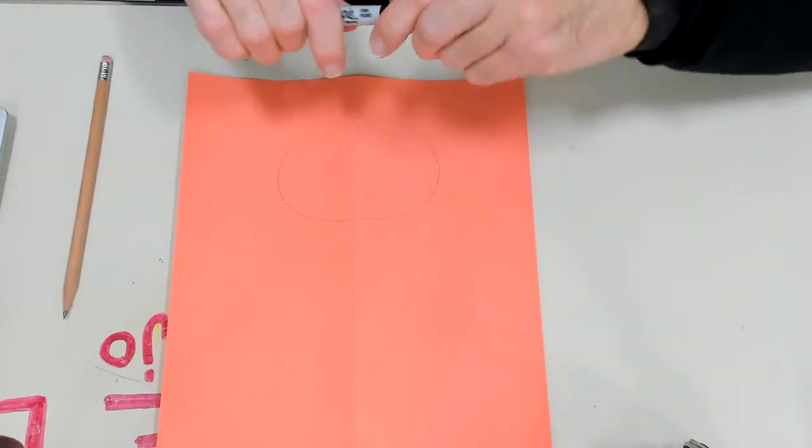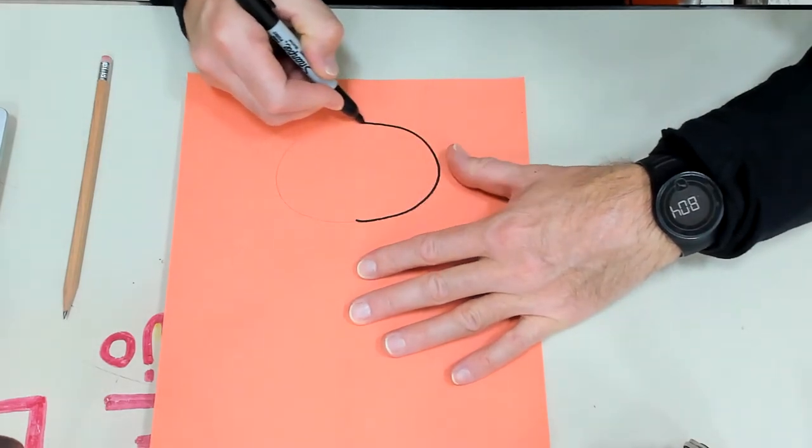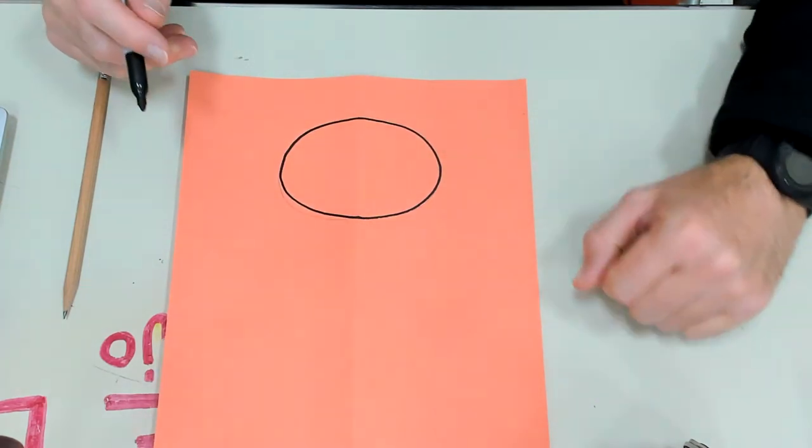I'll trace mine. I'll do mine in sharpie, but I want you to do yours in pencil. The only reason I'm doing mine in sharpie is so that you can see what I'm drawing. So there's my oval.